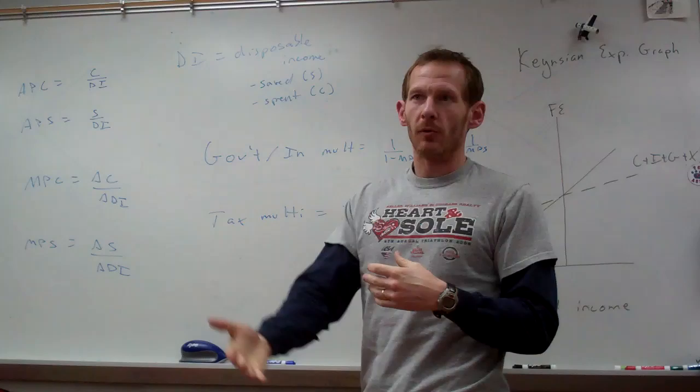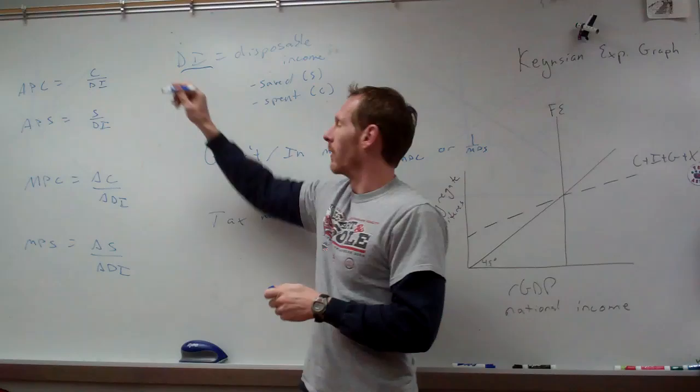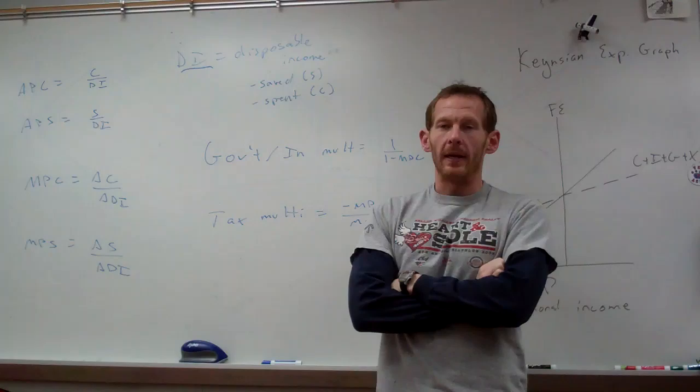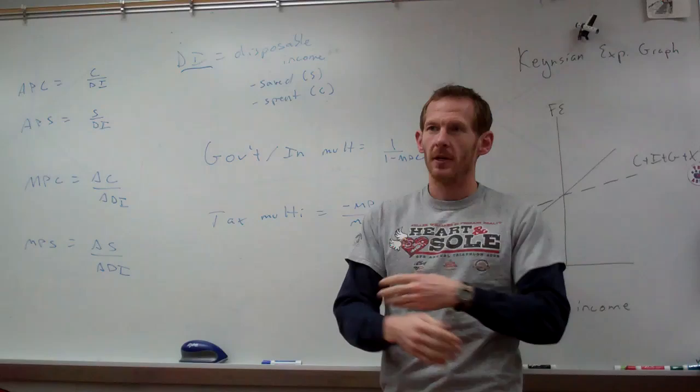We use a phrase called DI, which stands for disposable income. Disposable income is income that a household or individual will have where he or she can either spend it or save it. We call it disposable because it's after bills, taxes, and all that.